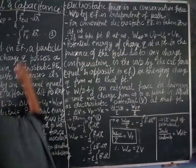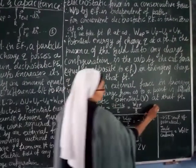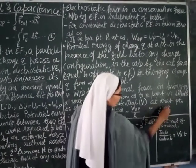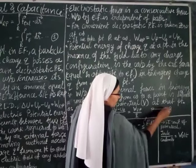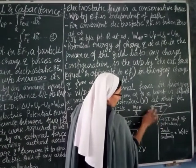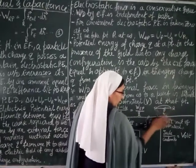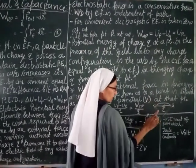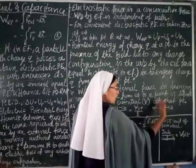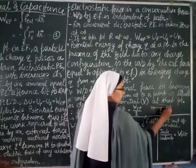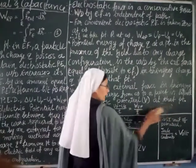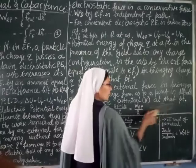When there is a conservative force, any work done is independent of path. Suppose you are bringing charge Q from point R to point P — you can take any path, it will not affect the potential difference, because it is a conservative force. It depends only on the final position and the initial position. That is the characteristic of conservative force: it is always path-independent.